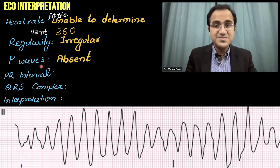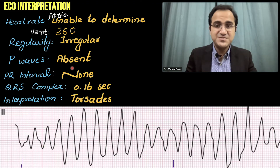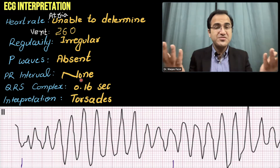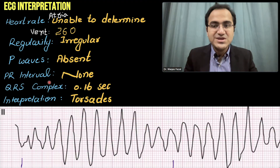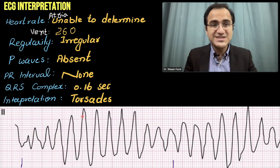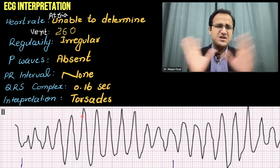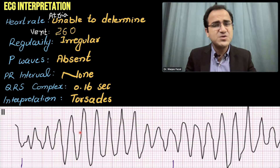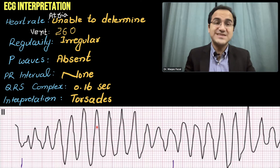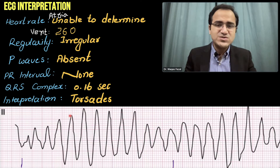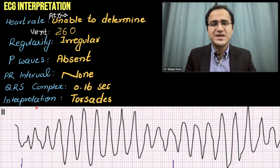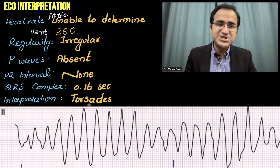Regularity is irregular. P waves are absent, so there is no PR interval to measure. Determining the exact size of the QRS complex in torsades is very difficult because we cannot identify exactly where the QRS complex starts and ends. We can simply state that the QRS complex is wide. The interpretation of this ECG is torsades de pointes.